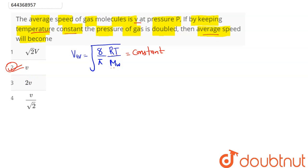Alternatively, using the relation PM = ρRT, we can write average speed as square root of (8/π) times (P/ρ). If pressure is doubled while temperature remains constant, R